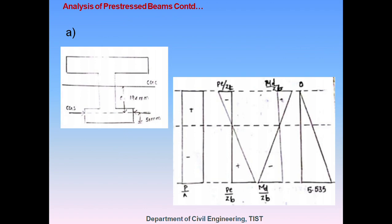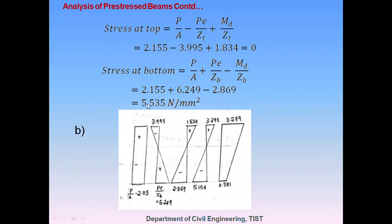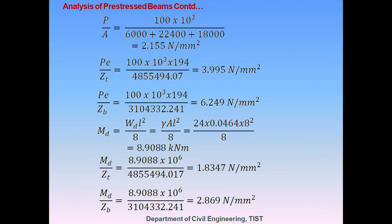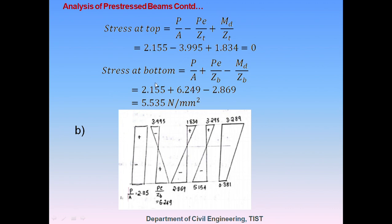For Case 1 — pre-stress plus self-weight — no live load is considered. The stress at the top is P/A − Pe/Z-top + MD/Z-top, and at the bottom is P/A + Pe/Z-bottom − MD/Z-bottom. The pre-stressing force is 100 kN, and P/A = 2.155 MPa for both cases.